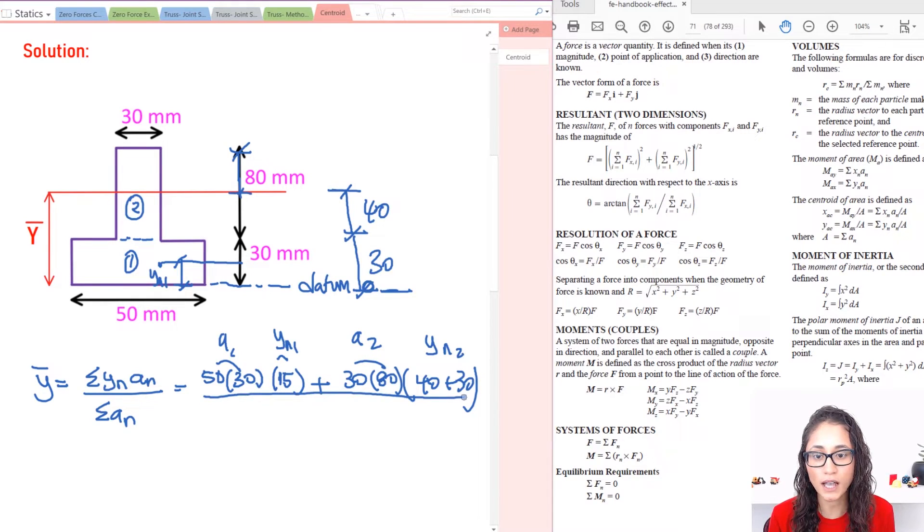Now, this whole thing has to be divided by the sum of the areas, which we have 50 times 30, plus 30 times 80. So this is equals to 48.85 millimeters.